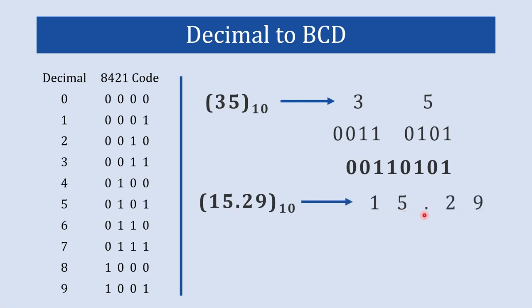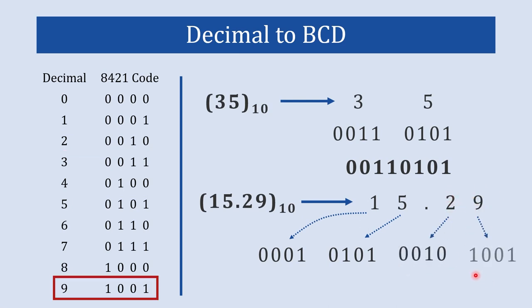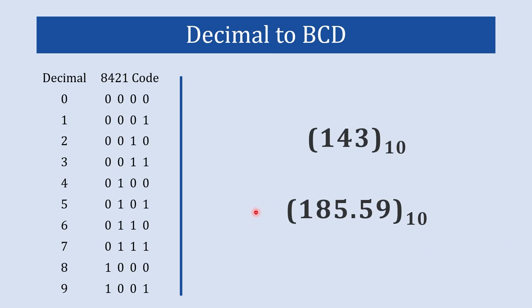Similarly, let's take another example with the fractional decimal number 15.29. We start with 5 — BCD code of 5 is 0101. Then BCD code of 1 is 0001. Then BCD code of 2 is 0010. And BCD code of 9 is 1001. Now we combine all these numbers together, keeping in mind that we place the decimal point between the appropriate groups. So that's how you can convert a decimal number into BCD code. Here you have two examples to solve by yourself — do it now and quickly write the answer in the comments below to verify that you have learned the concept correctly.